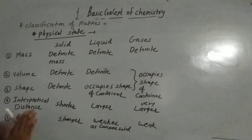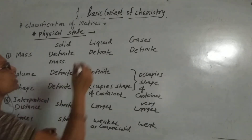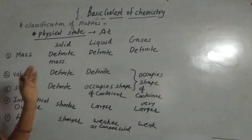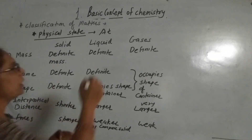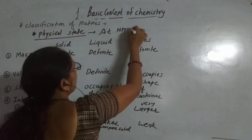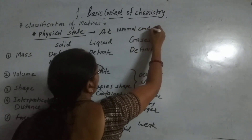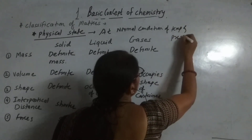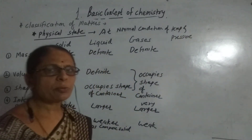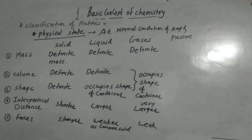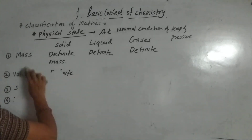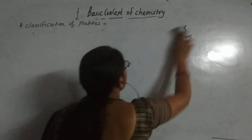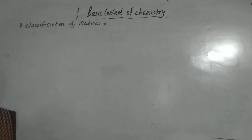On the basis of physical state, at the normal condition of temperature and pressure, we consider three states of matter. Now, the next point is the classification of matter on the basis of chemical composition. At normal condition of temperature and pressure, I consider these three states of matter. Now let us consider the classification on the basis of chemical composition.